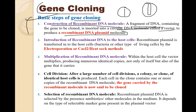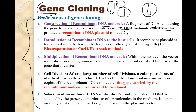I will be showing the pictorial view of the entire steps of gene cloning. The first step is to construct a recombinant DNA molecule, in which a particular piece of DNA containing the gene of interest is inserted into a circular DNA. This insertion of DNA into a circular DNA is called construction of a recombinant DNA molecule.